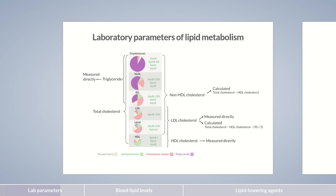Non-HDL cholesterol is, understandably, the difference between total and HDL cholesterol. However, the amount of non-HDL cholesterol can also be inferred indirectly by determining apolipoprotein B, in short, ApoB, since ApoB is found in all lipoproteins except for HDL. This value is quite interesting because all ApoB-containing lipoproteins are atherogenic.